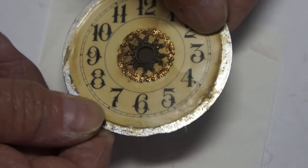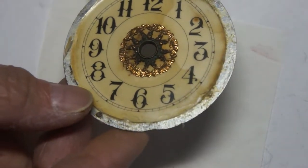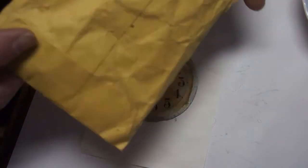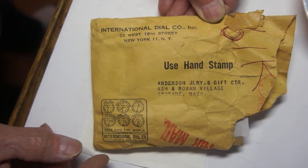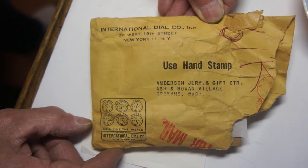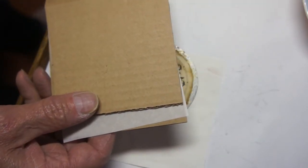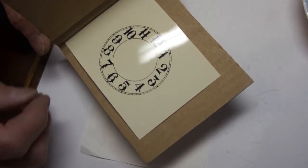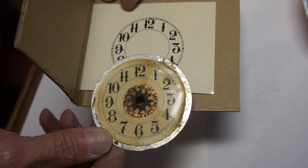On this dial, it really bubbled. They got some debris underneath it where they had glued it and the celluloid is chipped, cracked in a few places. I went through some of my old stock that I have and I found this envelope from the International Dial Company from New York. It was sent to an Anderson Jewelry and Gift Center in Spokane, Washington. In this is a new celluloid dial. It happens to be the same one as on this dial.